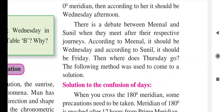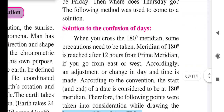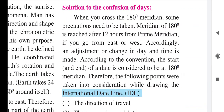There is a debate between Minal and Sunil when they meet after their respective journeys. According to Minal it should be Venus day; according to Sunil it should be Friday. The question is: where does Thursday go? To find a solution, we note that when crossing the 180° meridian, some precautions need to be taken. The 180° meridian is reached after 12 hours from the prime meridian, whether you go east or west.